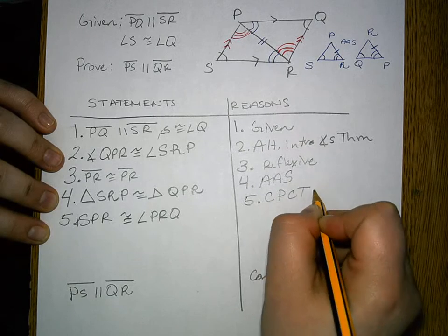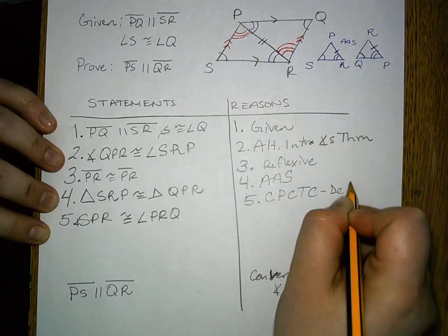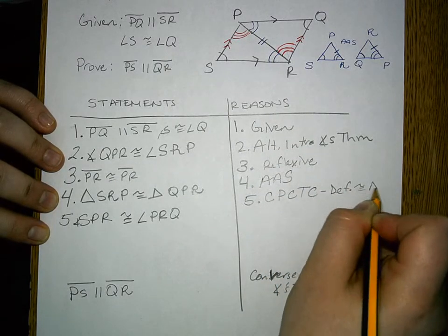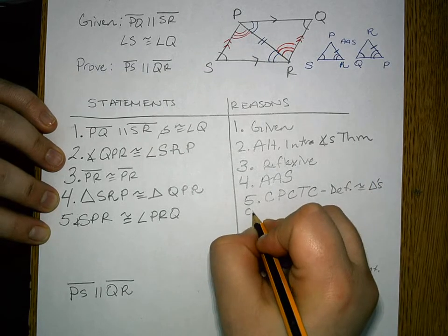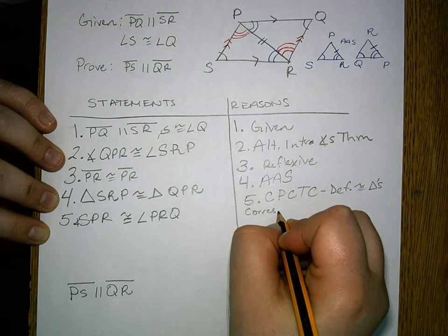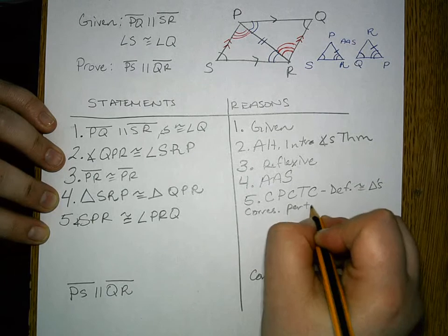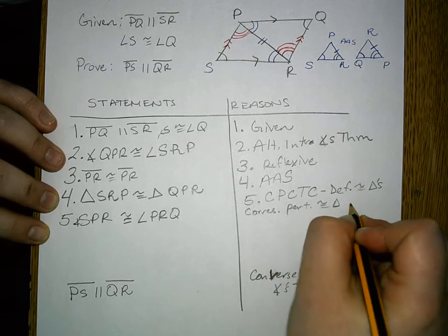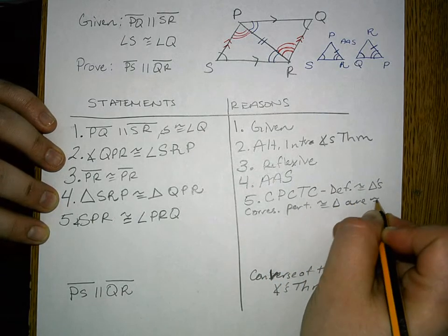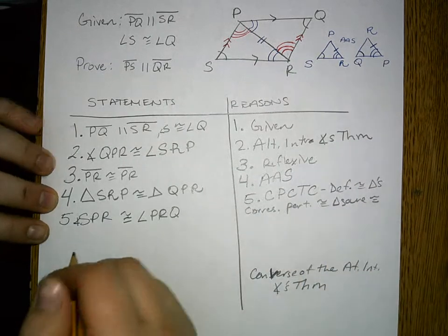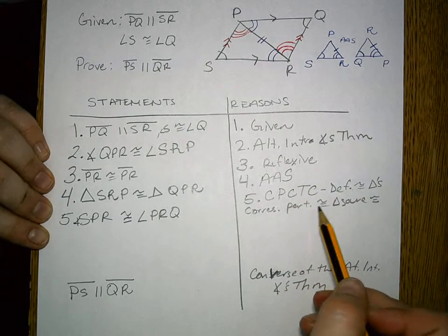This is also known as the definition of congruent triangles or corresponding parts of congruent triangles are congruent. You can write it one of these ways.